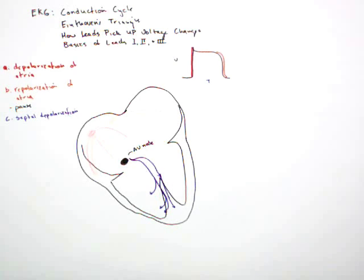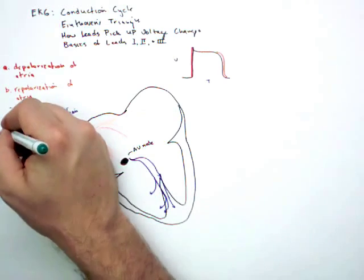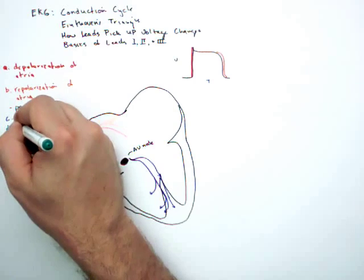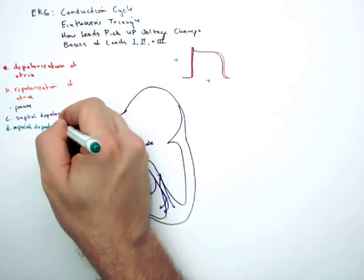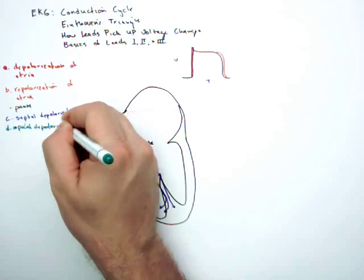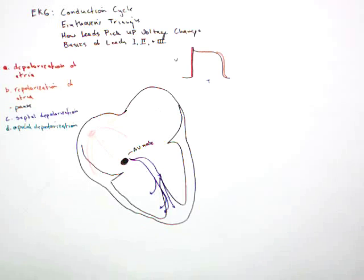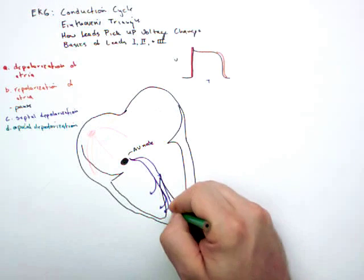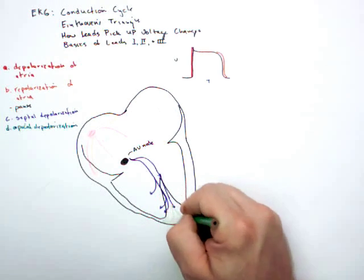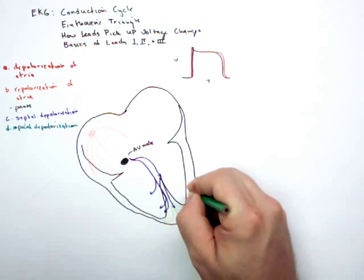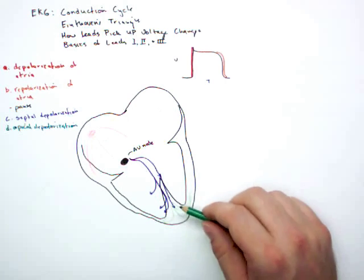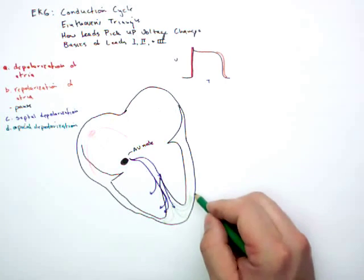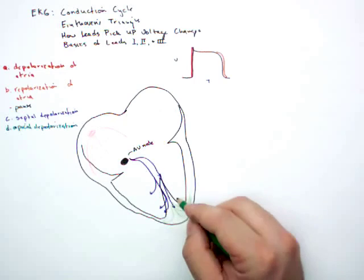Next step is called apical depolarization. This is where we depolarize the apex. Remember that the left side of the heart is much thicker. The wall is thicker than the right, so most of the voltage is going to go up to the left. That's why I've drawn more arrows.